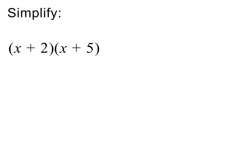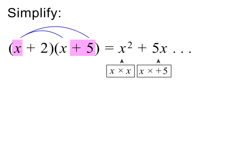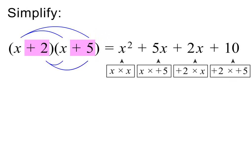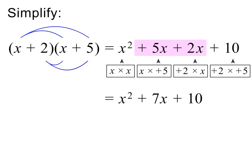Let's use FOIL to help us simplify this example. We begin by multiplying the first terms: x times x equals x squared. We then multiply the outer terms: x times plus 5 equals plus 5x. Then we multiply the inner terms: plus 2 times x equals plus 2x. We end by multiplying the last two terms: plus 2 times plus 5 equals plus 10. We have two like terms, so we can simplify further — 5x plus 2x equals 7x. Now we are finished. Please pause to check my working.